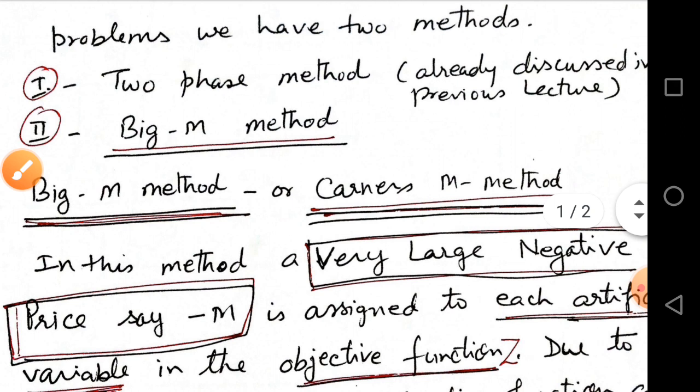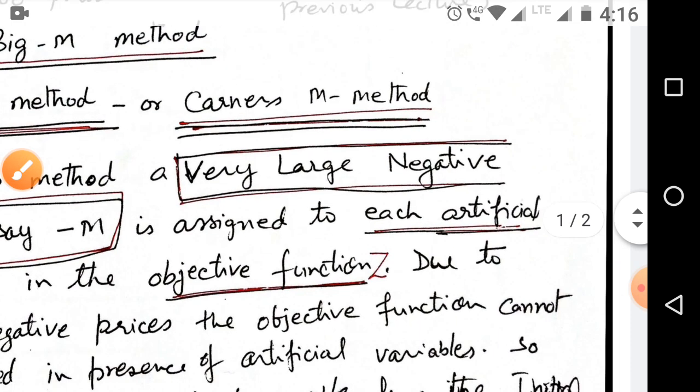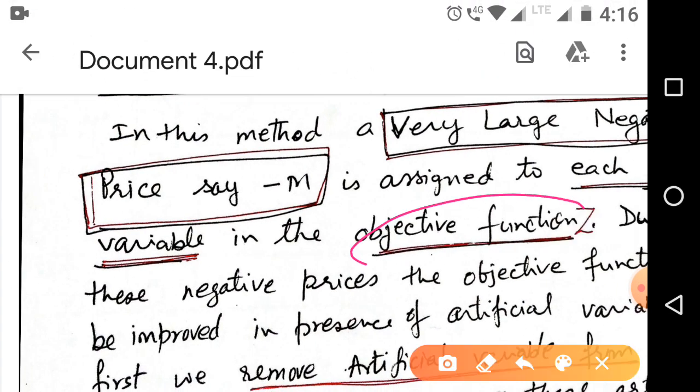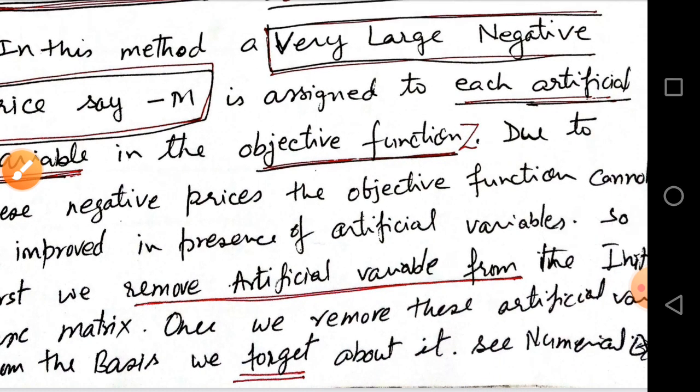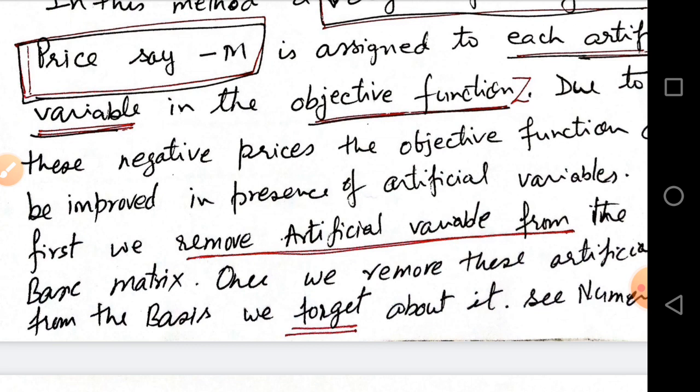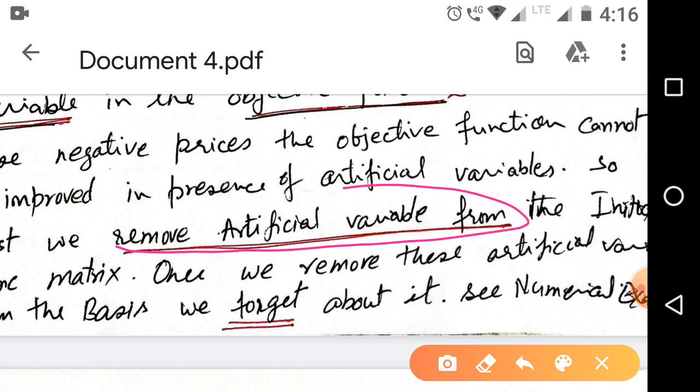In this method, a very large negative price, say minus M, is assigned to each artificial variable in the objective function Z. Due to this negative price, the objective function cannot be improved in presence of artificial variable. Z cannot be improved. So first we remove the artificial variable from the basic using simplex method, as usual simplex method.